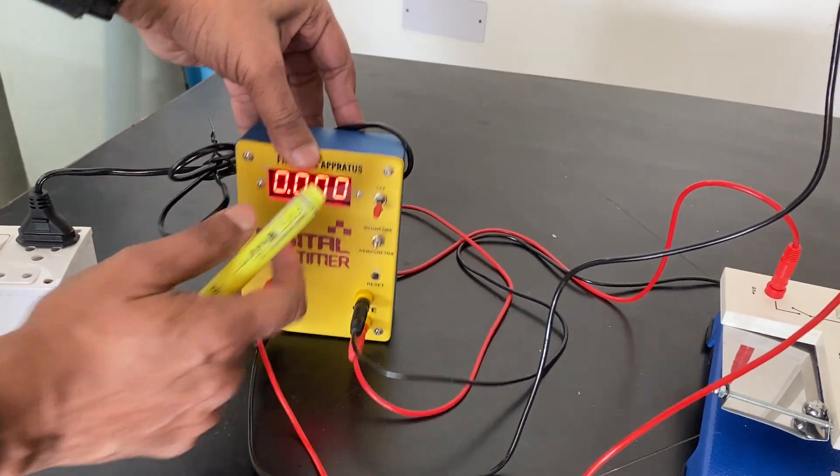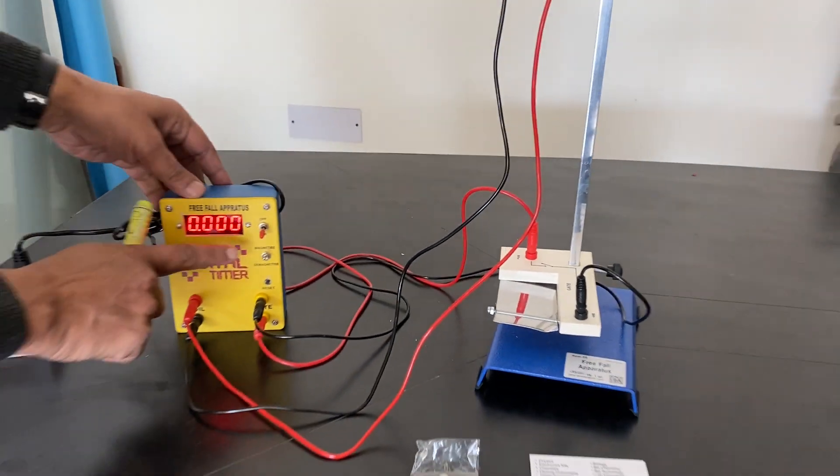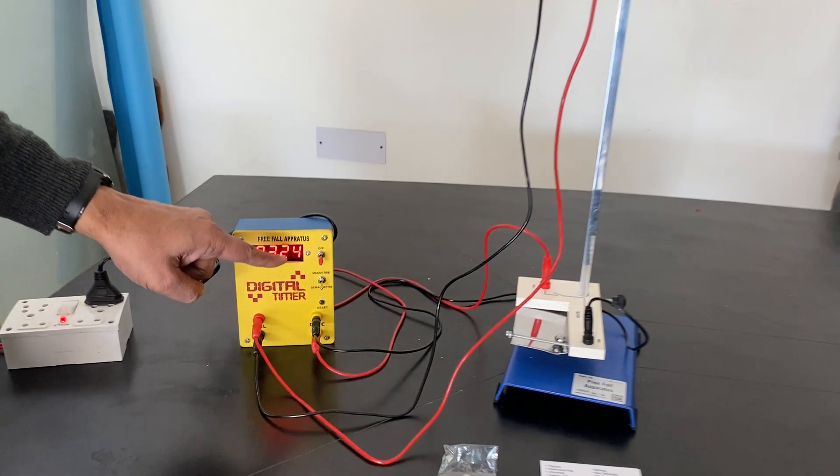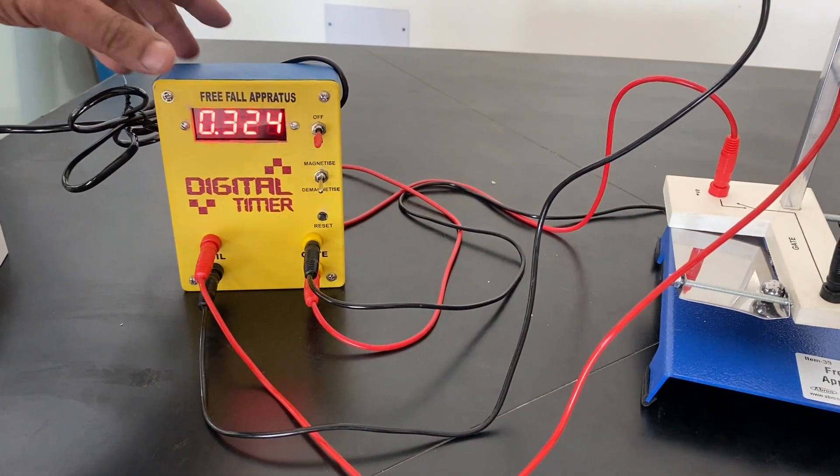Then when you put it on magnet, the coil will become a magnet. See I am just putting the coil here and there are two balls. I just take out one and whenever I just switch on it gives 0.324. It is one thousandth of a second it tells you. And very easy to use.